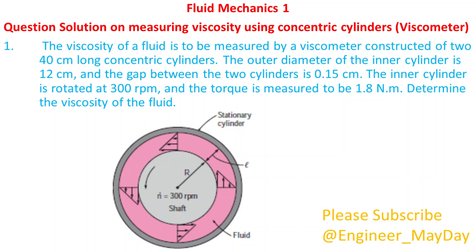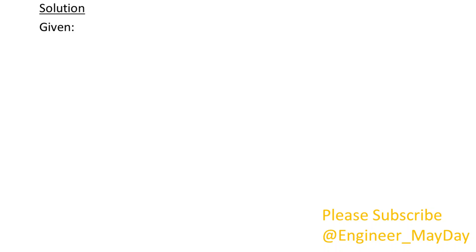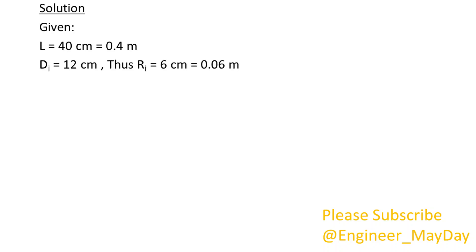Determine the viscosity of the fluid. Solution. Given: length L equals 0.4 meters. Diameter of inner cylinder DI equals 12 centimeters, thus radius of inner cylinder RI equals 0.06 meters.